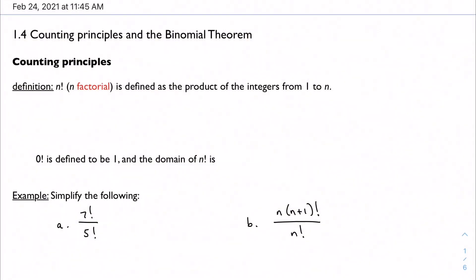In the last section of chapter 1, we want to talk about counting principles and the binomial theorem. We'll start with just the counting principles. Hopefully a little bit of this might actually be familiar to you from a previous math class. But we want to start off with this notation, n factorial, and it's written this way.